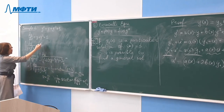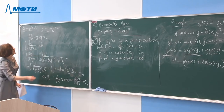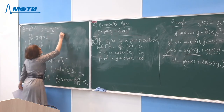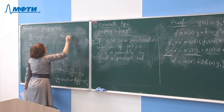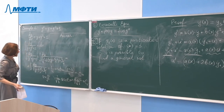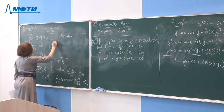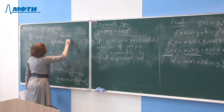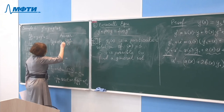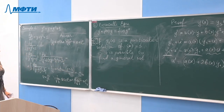Substituting a = √3/2, we get (2/√3)·arctan((2y + 1)/√3) plus C₁ equals x. So the answer is given implicitly as (2/√3)·arctan((2y + 1)/√3) equals x plus C. This is done — very easy.